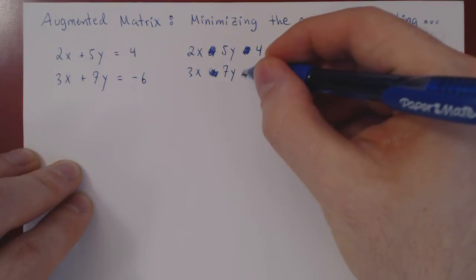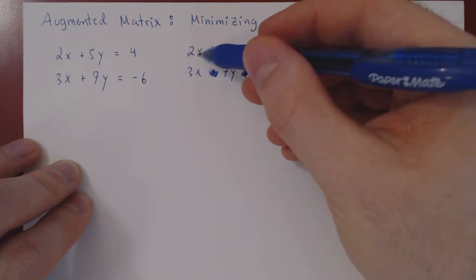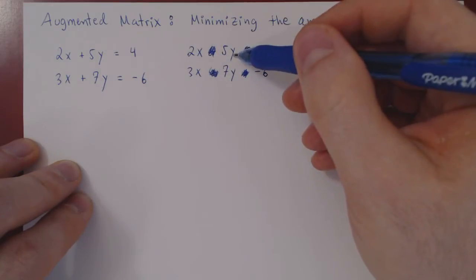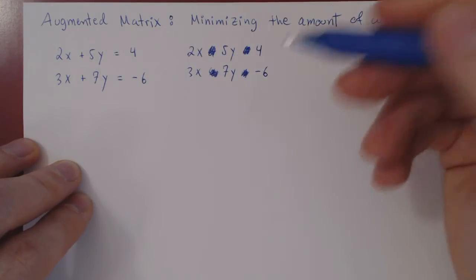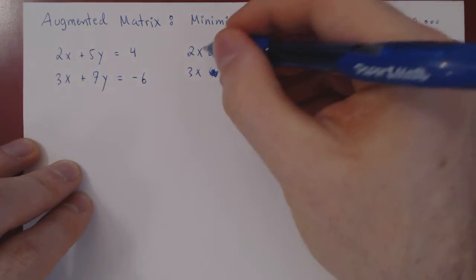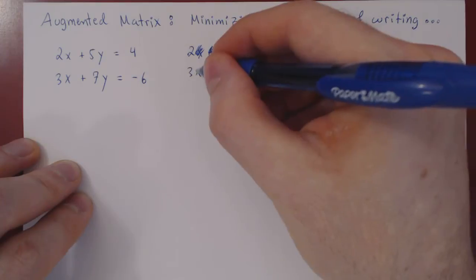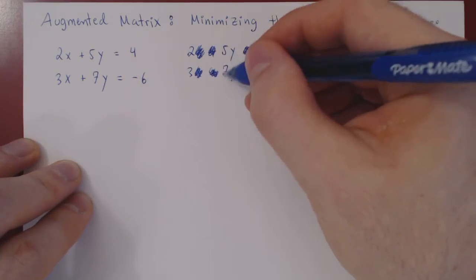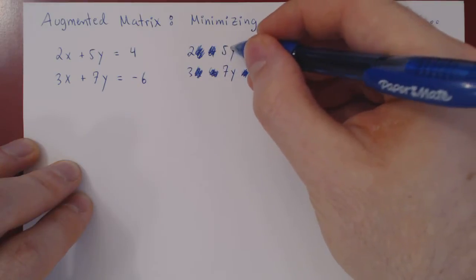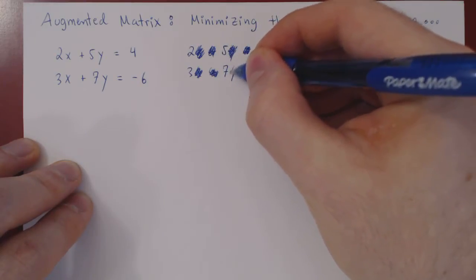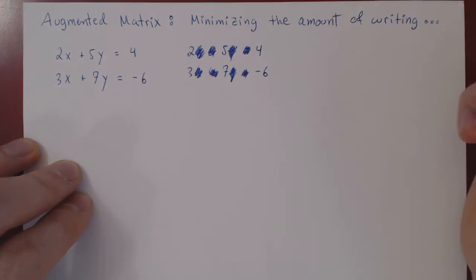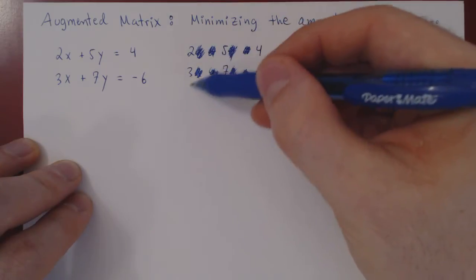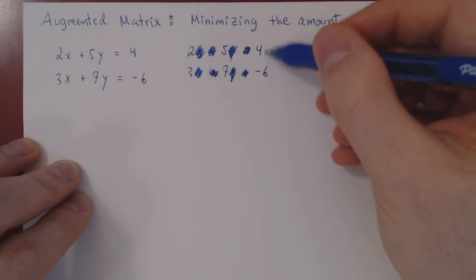And now, if we are consistent in how we order the variables — say all of the x's first, then all of the y's second and so forth — we can also drop the variables themselves. The coefficients 2 and 3 are for x, and the coefficients 5 and 7 are for y. As long as we keep them in the same order, we don't need to write the variables.